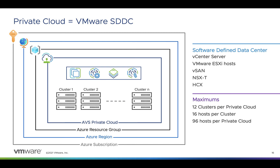Mapping out where AVS lives within the Azure Resource Manager hierarchy: as with all other Azure resources, private clouds are deployed and managed from within an Azure subscription. The number of private clouds per subscription is scalable — initially there's a soft limit of one private cloud per subscription, but you can expand that with a ticket. Within the subscription, the region where the private cloud will live is defined, and within that region we create a resource group for the private cloud, where our vSAN clusters and ESXi hosts will live.